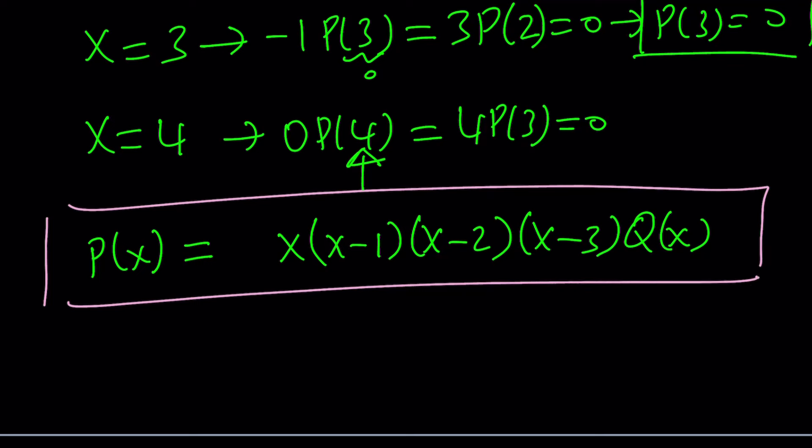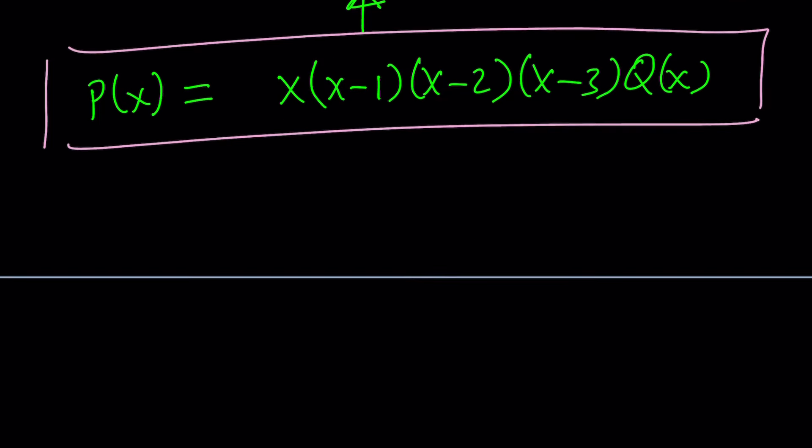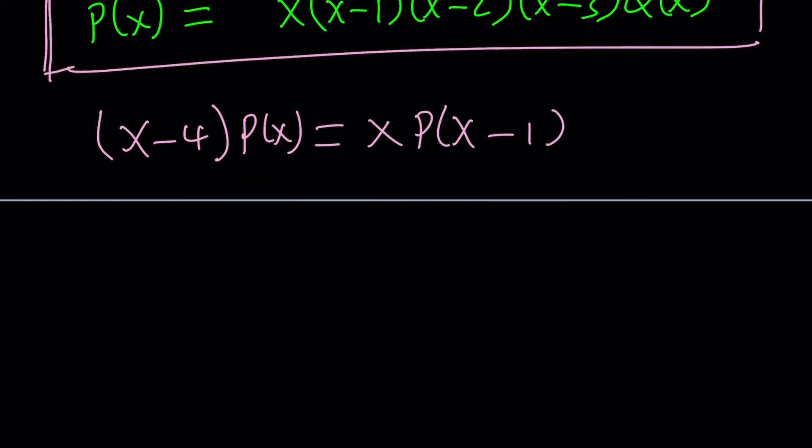The second one, I mean. X minus 4 times P of X equals X times P of X minus 1. By the way, what would happen if you use this in the very original equation? Would you get the same thing? That's a good question. Anyways, let's go ahead and plug it in.